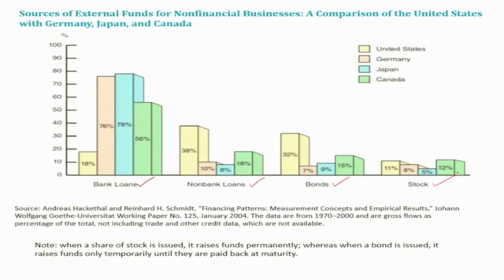This is data from 1970 to 2000, showing the percentage of total external funds for firms. You can see that for the US, non-bank loans occupy a larger share, but for Germany, Japan, and Canada, bank loans occupy the larger share.